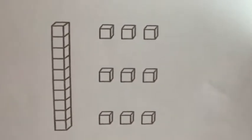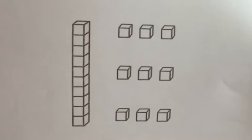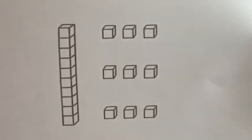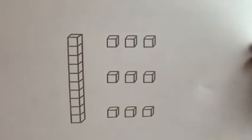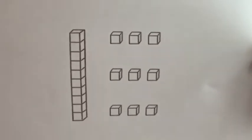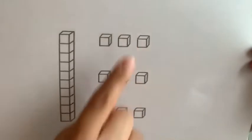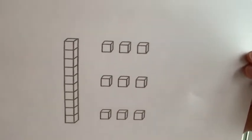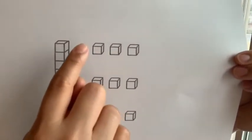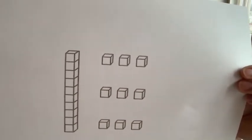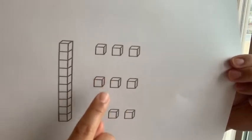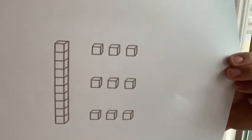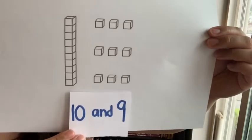Our next model is our 10-stick and some more ones. Remember that good mathematicians look for groups of 10s and groups of 1s. I see a 10-stick — I know right away that's my group of 10 because there are 10 cubes. And there are my ones. I can count by ones, or I can see them in smaller groups: a group of 3, a group of 3, and a group of 3. So I can count by 3s: 3, 6, 9. So I have 9 more ones and 1 group of 10. The say 10 way would sound like 10 and 9.